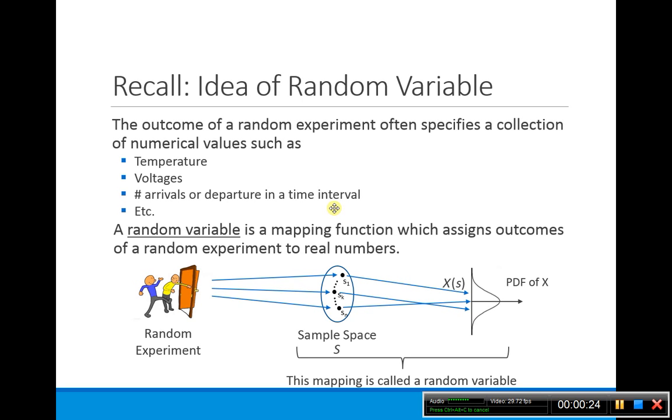Remember this idea of a random variable. You have a random experiment, and you have some kind of sample space that goes with this. The random variable is this mapping which assigns the outcomes of a random experiment to the real numbers.